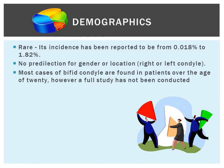Bifed condyle is a relatively rare occurrence. Its incidence has been reported to be from 0.018% to 1.82%. There is no predilection for gender or location, so it occurs equally in both males and females and equally in the right and left condyle. Most cases are found in patients over the age of 20, however a full study has not been conducted.